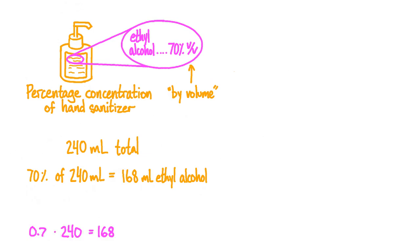As a reminder, to find 70% of 240, we can take the decimal form of 70%, which is 0.7, and multiply it by 240 to get 168. The remaining 72 milliliters — the part of the hand sanitizer that isn't ethyl alcohol — is made up of inactive ingredients. These include fillers, binders, and fragrances.